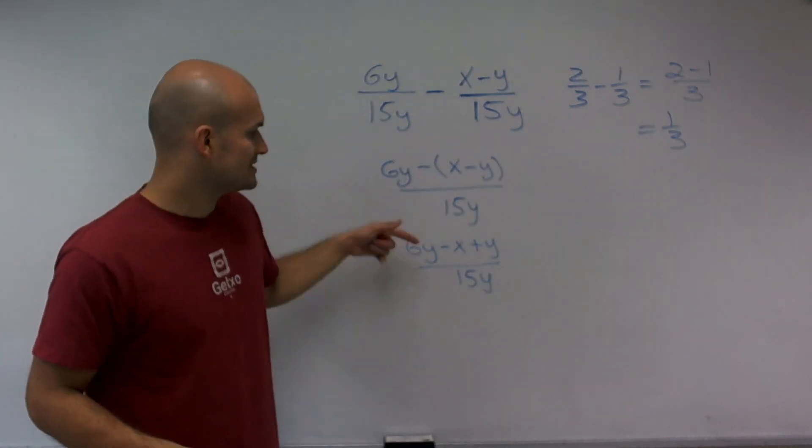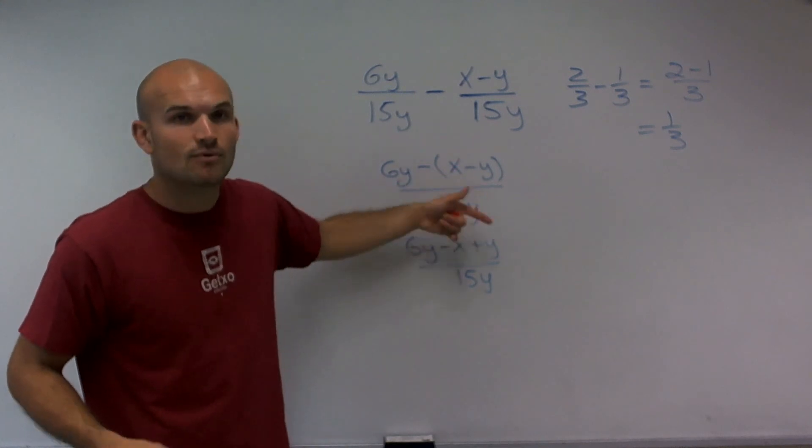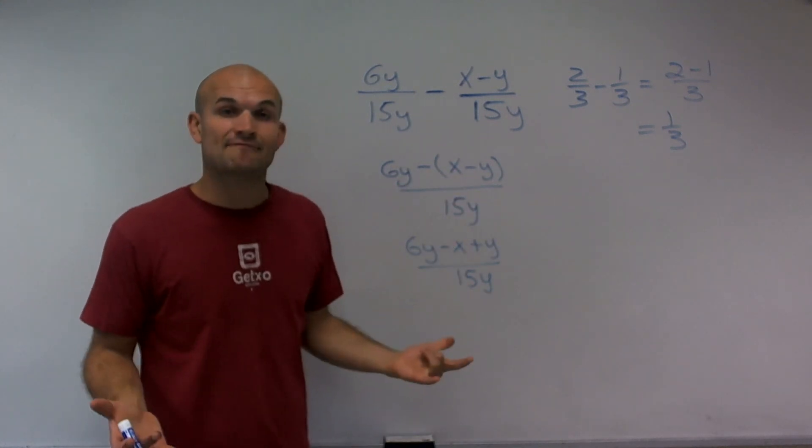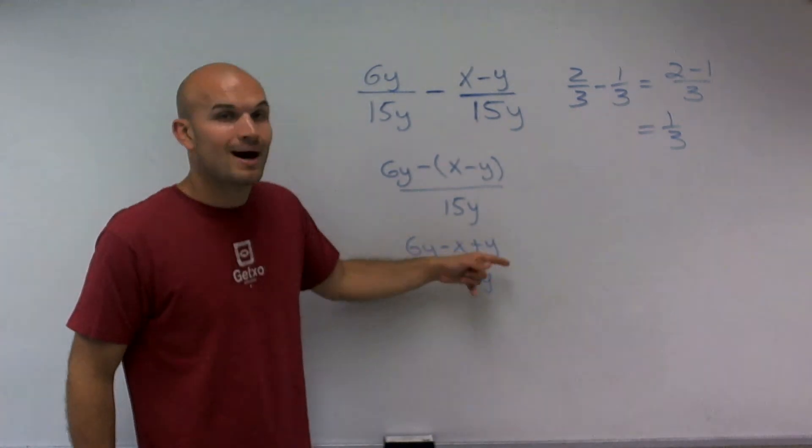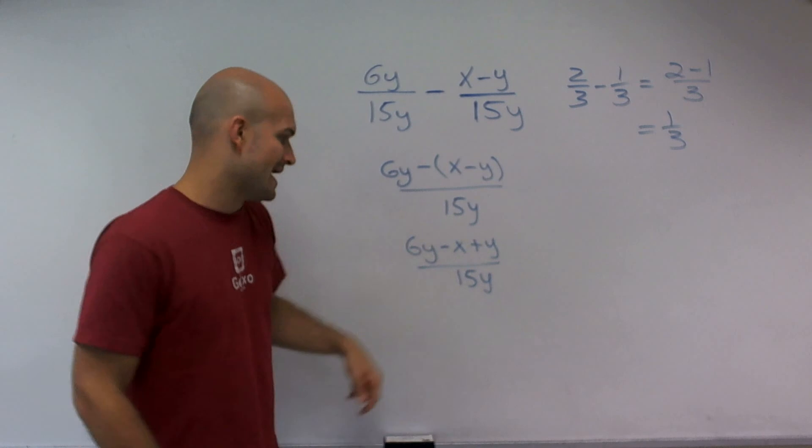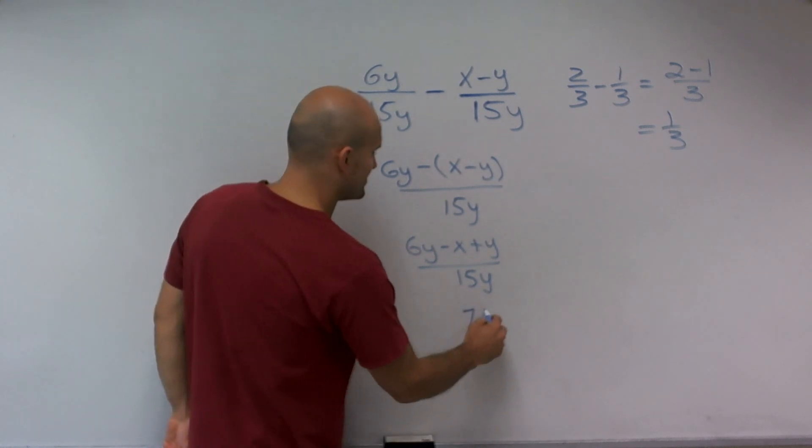Now what I can do is I can just combine the 6y plus the y. Since I can't combine a y and an x since they're not the same factor, they're not like terms, I can only combine the 6y and the y. Since they're both positive, I'm going to add them up. So my final answer will be 7y, right?